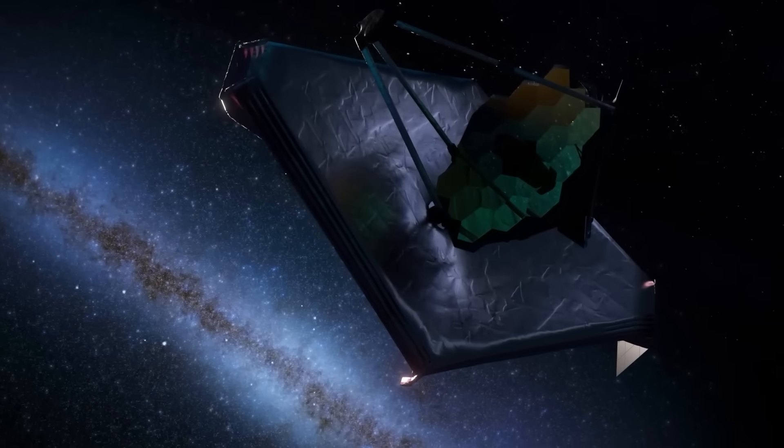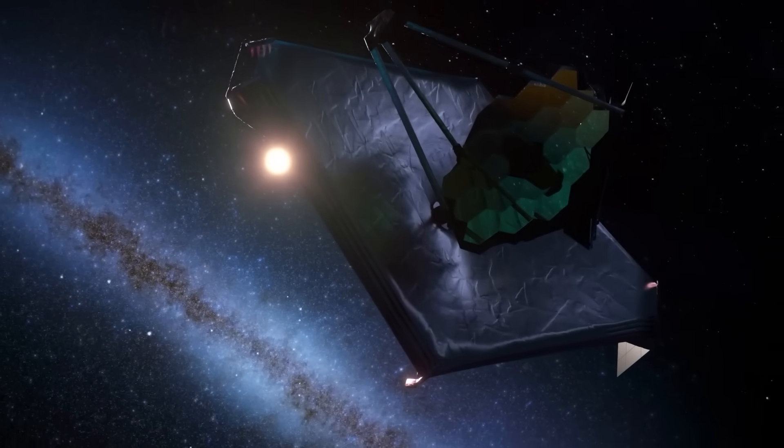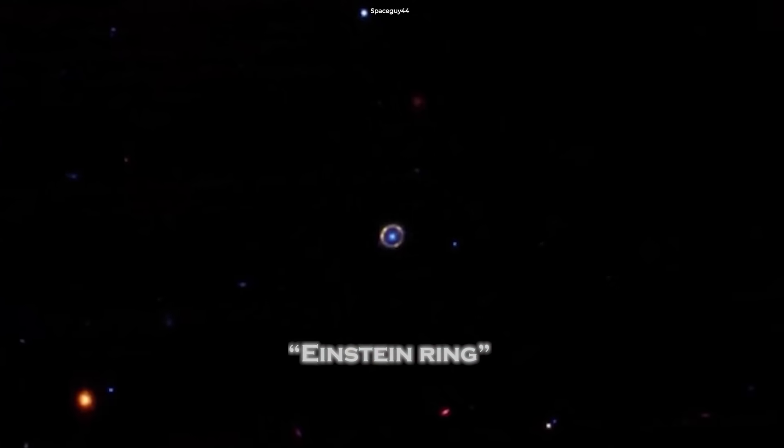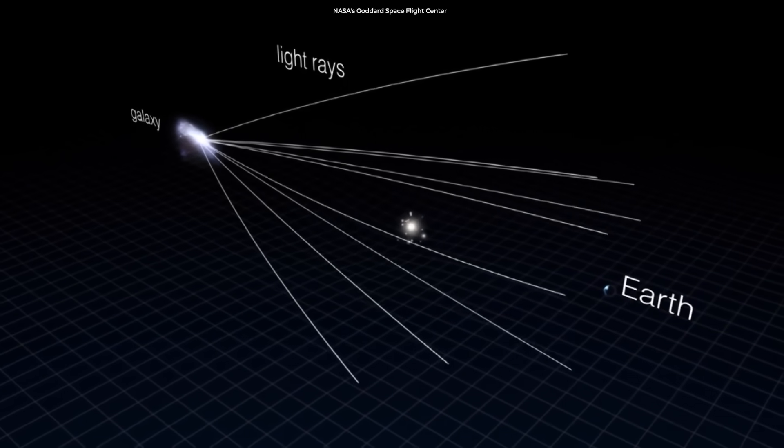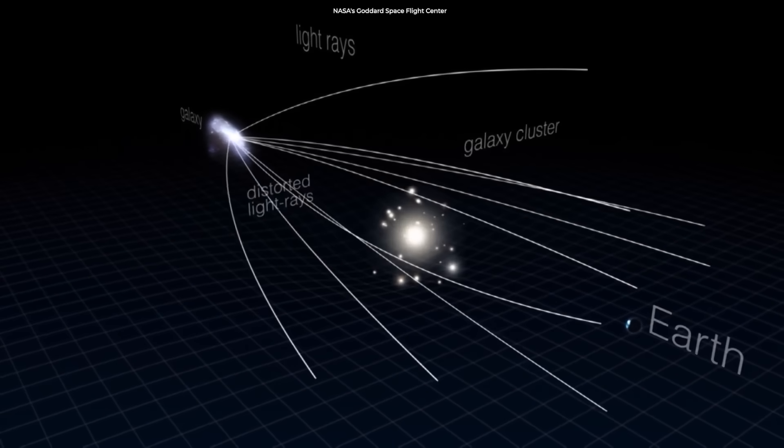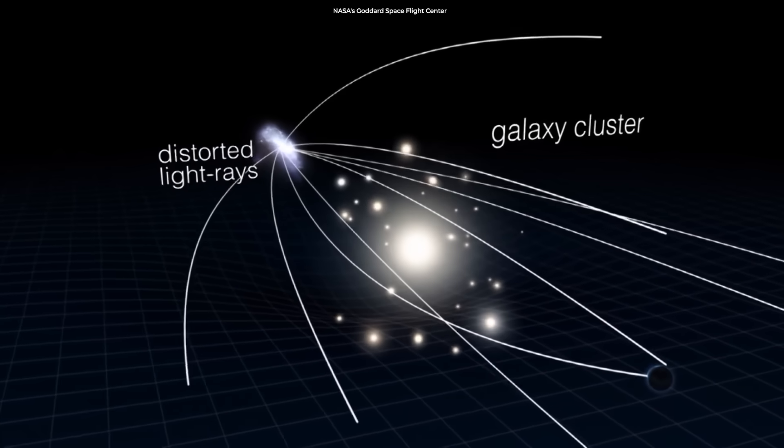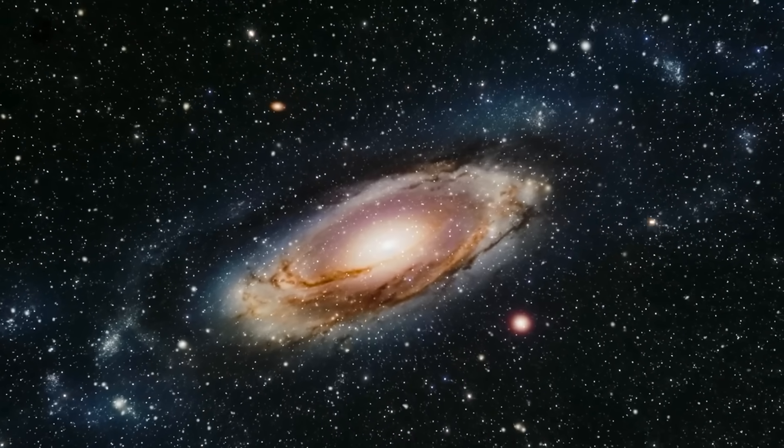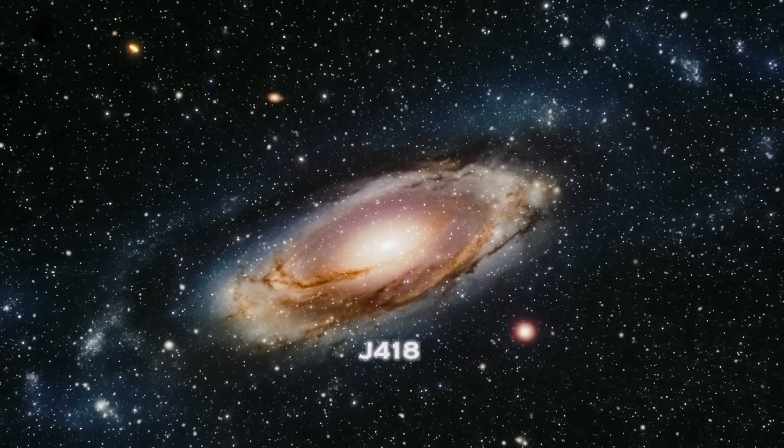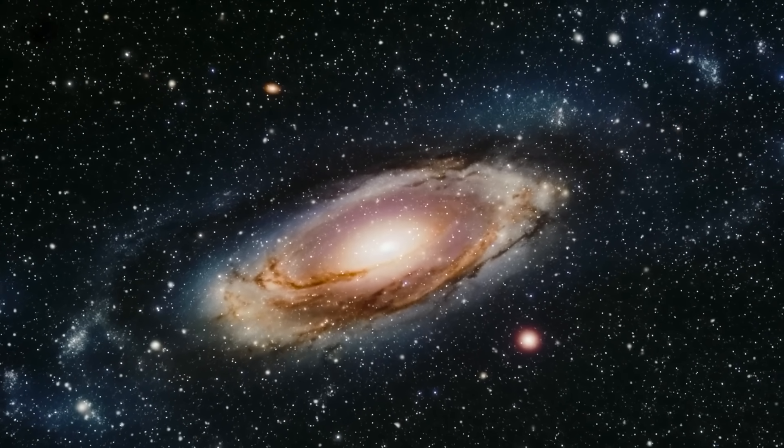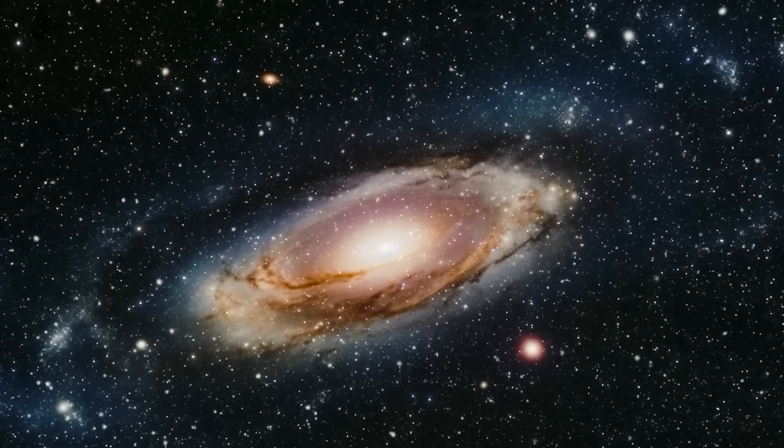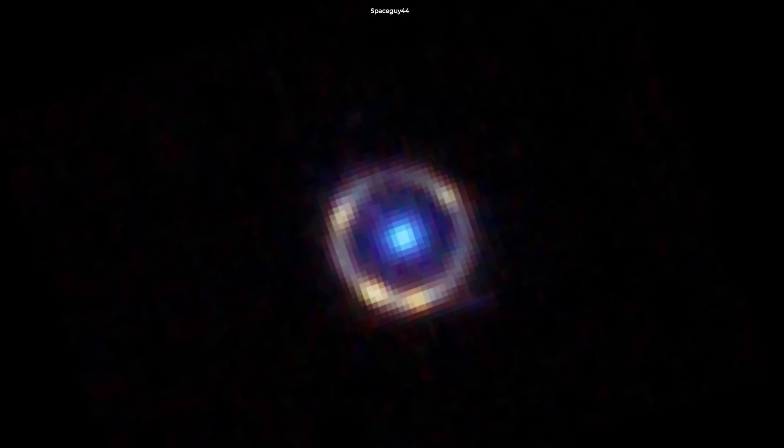In one of the most surreal discoveries yet, James Webb imaged what's known as an Einstein ring, a gravitational lens caused by a massive foreground galaxy bending the light of one directly behind it. But this ring, located around Galaxy J418, isn't just any lens. It's nearly perfect, a full uninterrupted circle of light with such mathematical symmetry that even the most experienced astrophysicists were left stunned.